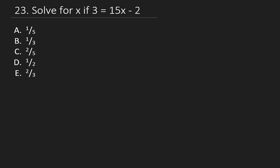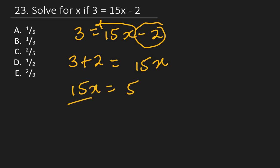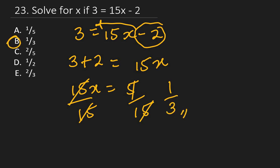Question 23: Solve for x if 3 = 15x − 2. Move −2 to the left side: as it crosses the equals sign, it becomes +2. So 3 + 2 = 15x, giving 5 = 15x. Divide both sides by 15: x = 5/15 = 1/3. The right answer is B.